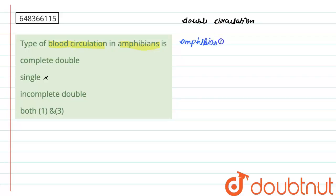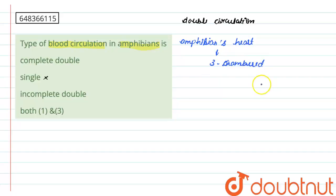Amphibians' hearts are always predominantly three-chambered. They only have three-chambered hearts, compared to humans who have four-chambered hearts. In this three-chambered heart, the left atrium...